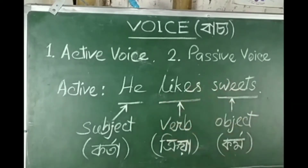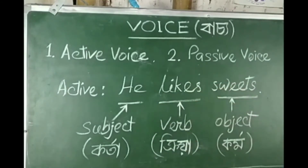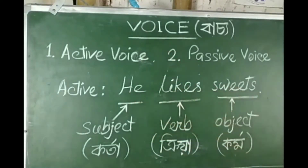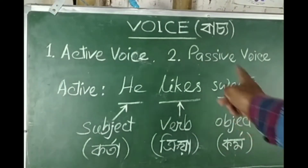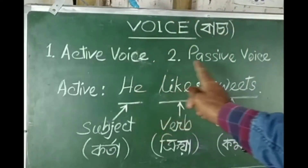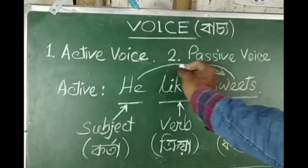Take the example: 'He likes switch.' Here, the subject is 'he', the verb is 'likes', and the object is 'switch'. In active voice the subject is 'he'. In passive voice, the object becomes the subject.